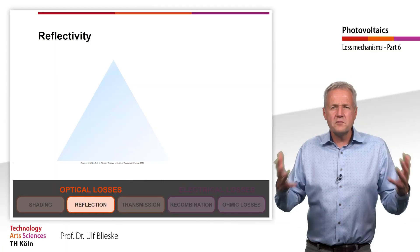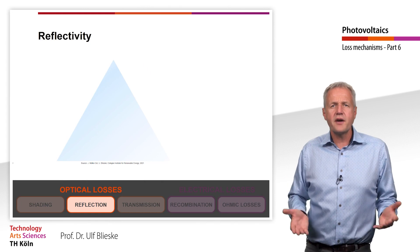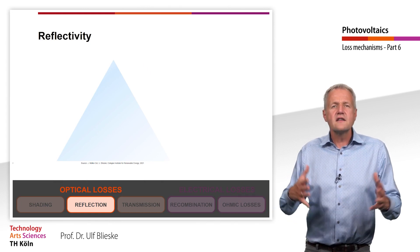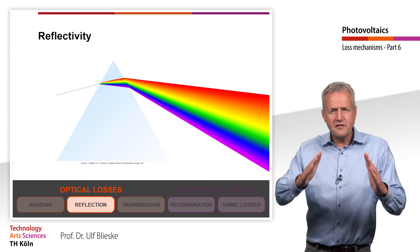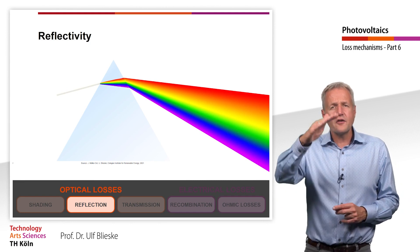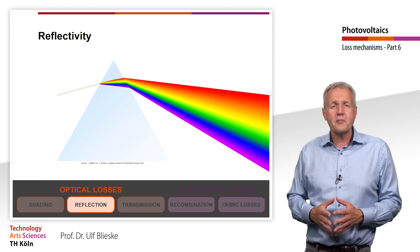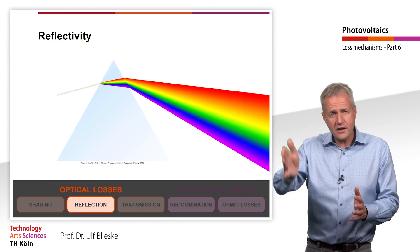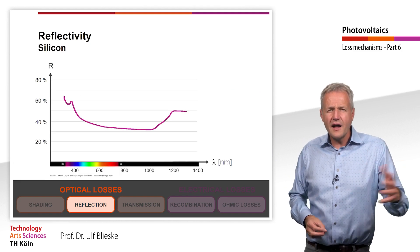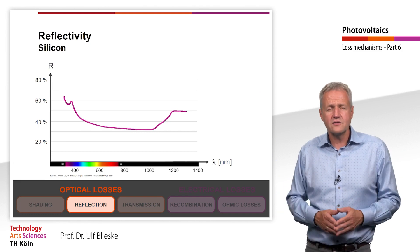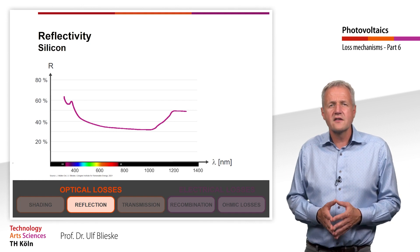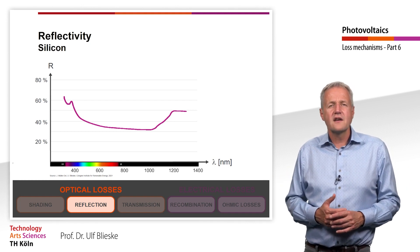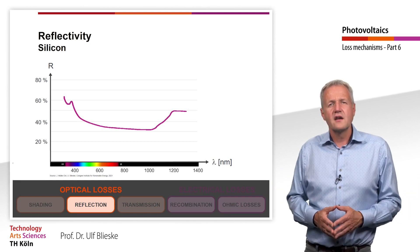The refractive index of a material depends on the wavelength of the light — as seen, for example, when light is refracted in a prism. Since the refractive index is wavelength-dependent, light of different wavelengths is refracted to different degrees, splitting the light into spectral colors. As a result, the degree of reflection is also a function of wavelength. Shown here is the reflectance of silicon for perpendicular incidence. The reflectance is even greater at smaller wavelengths, reaching almost 50% at 400 nm.